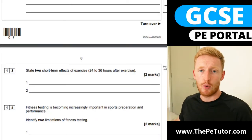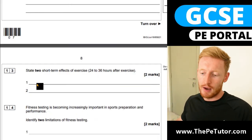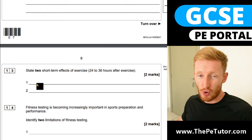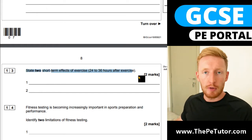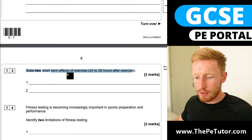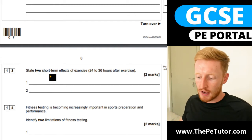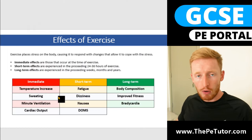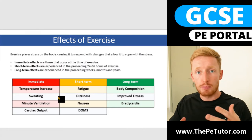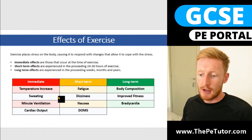Hello and welcome to this exam question video. Today we are in the anatomy, physiology or exercise physiology section of this exam paper and we're going to be looking at question 13, which is asking about short-term effects of exercise. We can split responses to exercise or adaptations to exercise into three different categories.